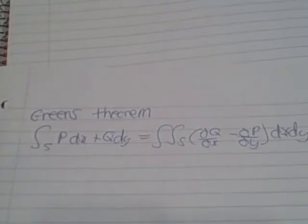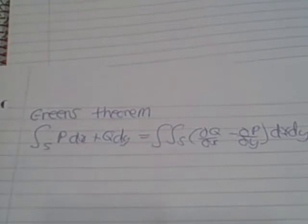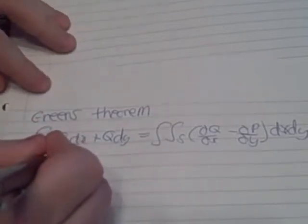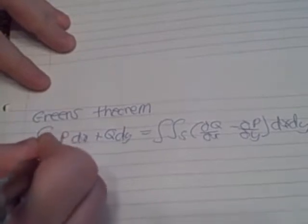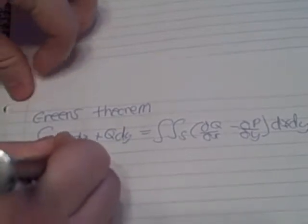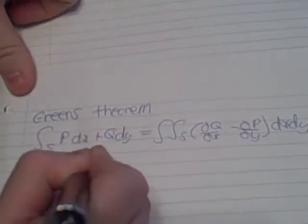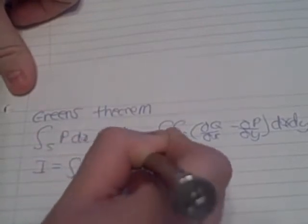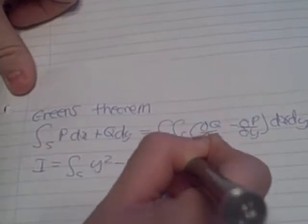Now, our example that we're going to do is going to be this. So if we have i, that could be our integral. c y squared minus sine e to the x plus xy. And this can be our dx part.